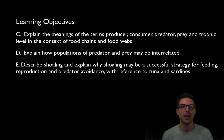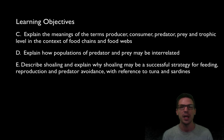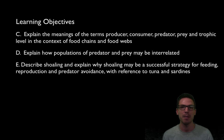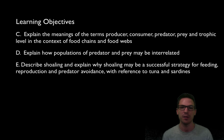In this video we're going to be taking a look at three things in particular. By the end you should have a firm idea about terms like producer, consumer, predator, prey, and trophic levels — really be able to explain those terms in the context of food chains and food webs. You should be able to explain how predators and prey are interrelated and how they impact each other. We're also going to take a look at something called shoaling, which is a behavior in fish, and explain why fish shoal and how it's a successful strategy for feeding, predator avoidance, and reproduction.